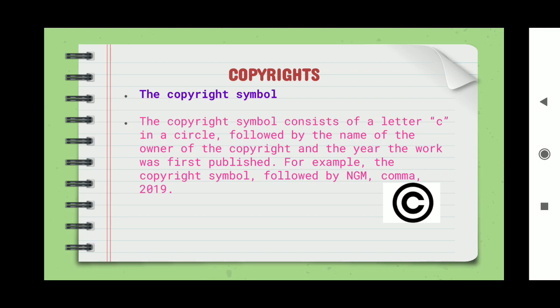The copyright symbol consists of the letter C in a circle, followed by the name of the owner of the copyright and the year the work was first published. For example, © NGM 2019 means NGM College published a book or article in the year 2019.